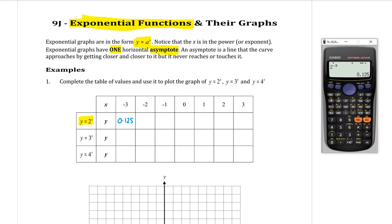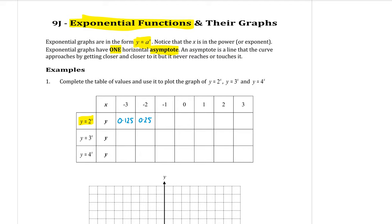Then to the power of minus 2, which is a quarter or 0.25. When I sub in minus 1 I get a half. 2 to the power of 0 is equal to 1. 2 to the power of 1 is 2. 2 to the power of 2 is 4. And 2 to the power of 3 is 8.